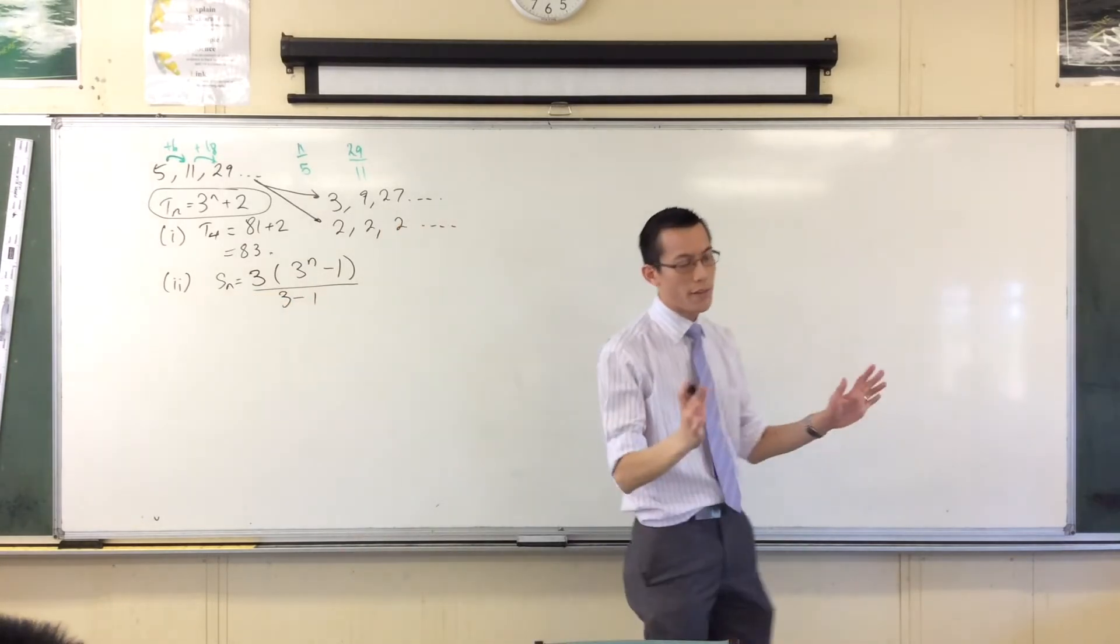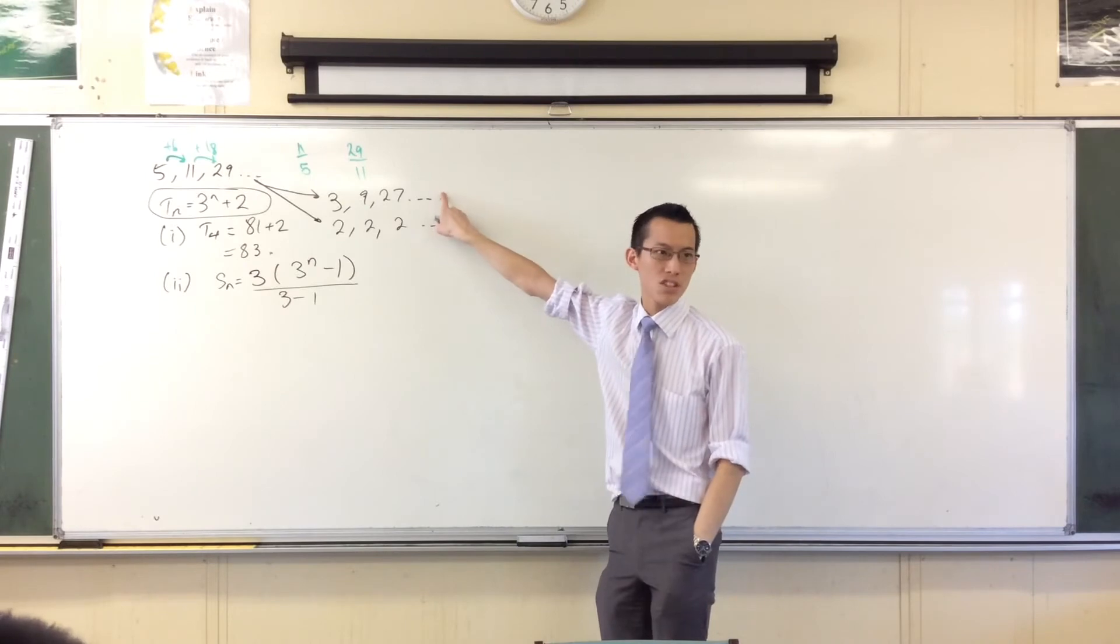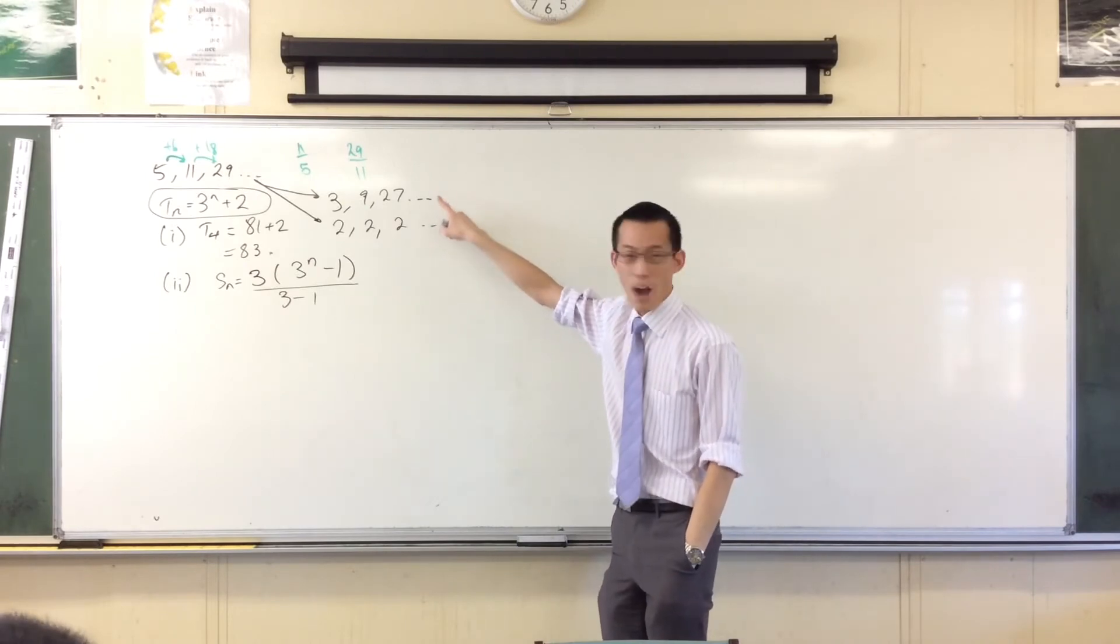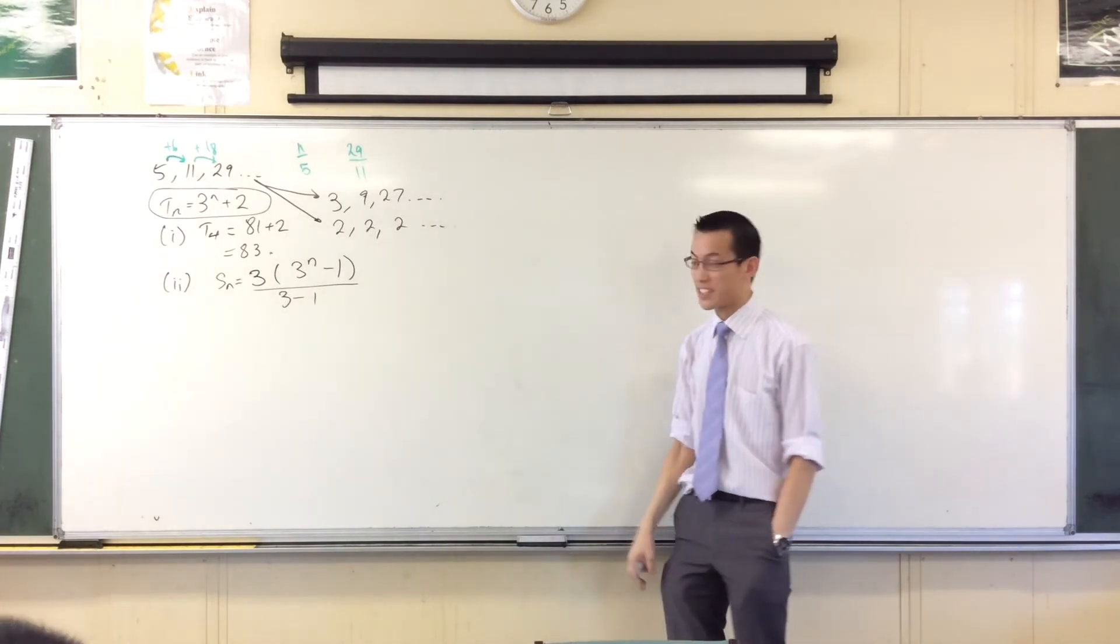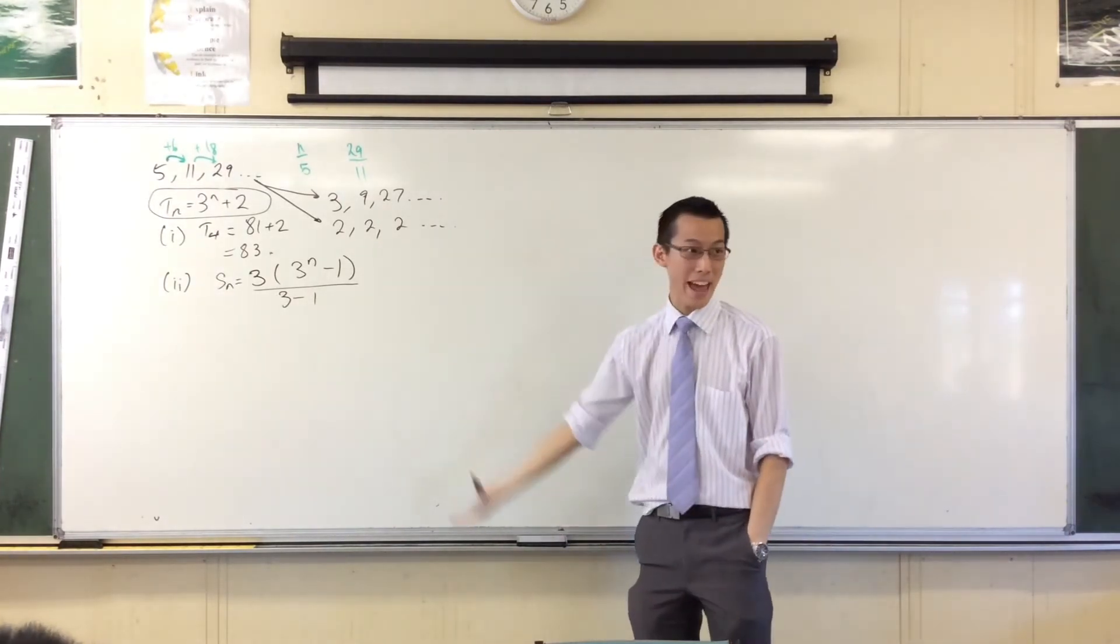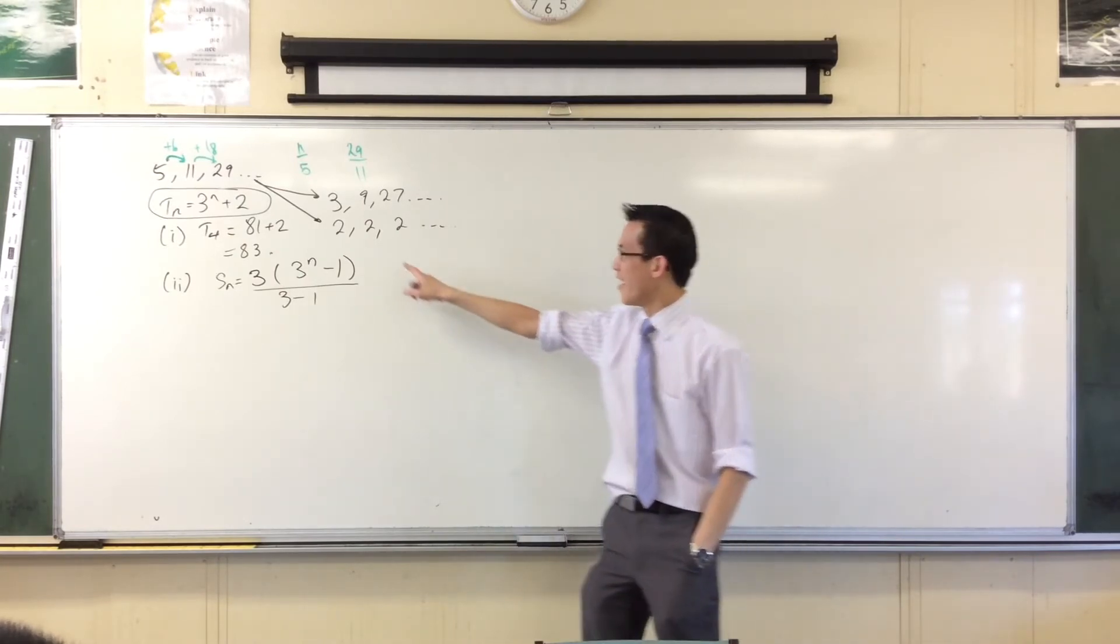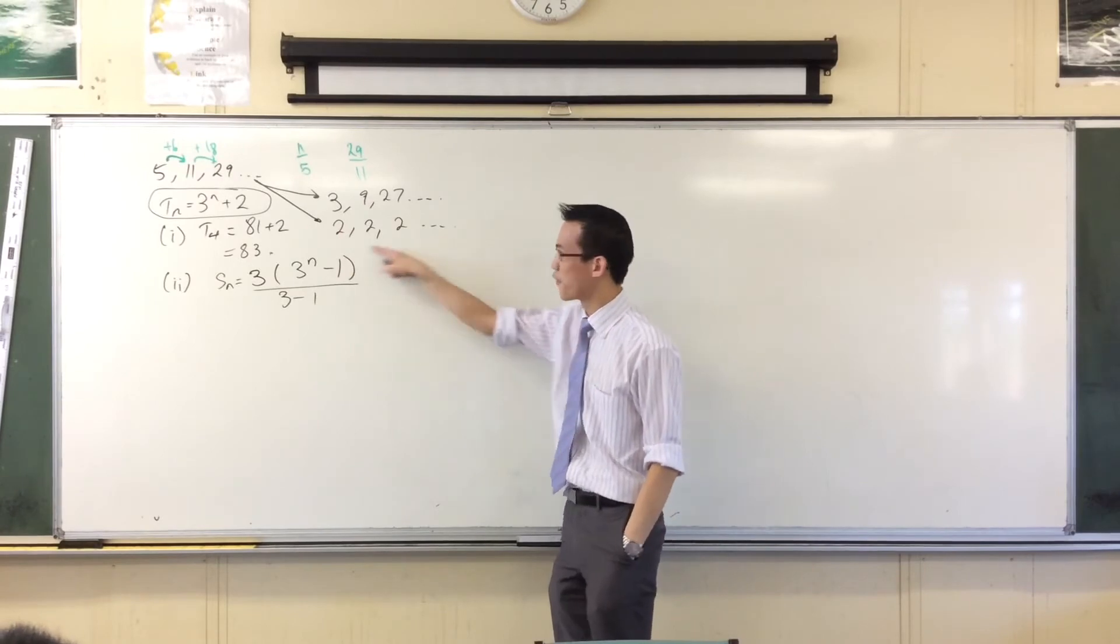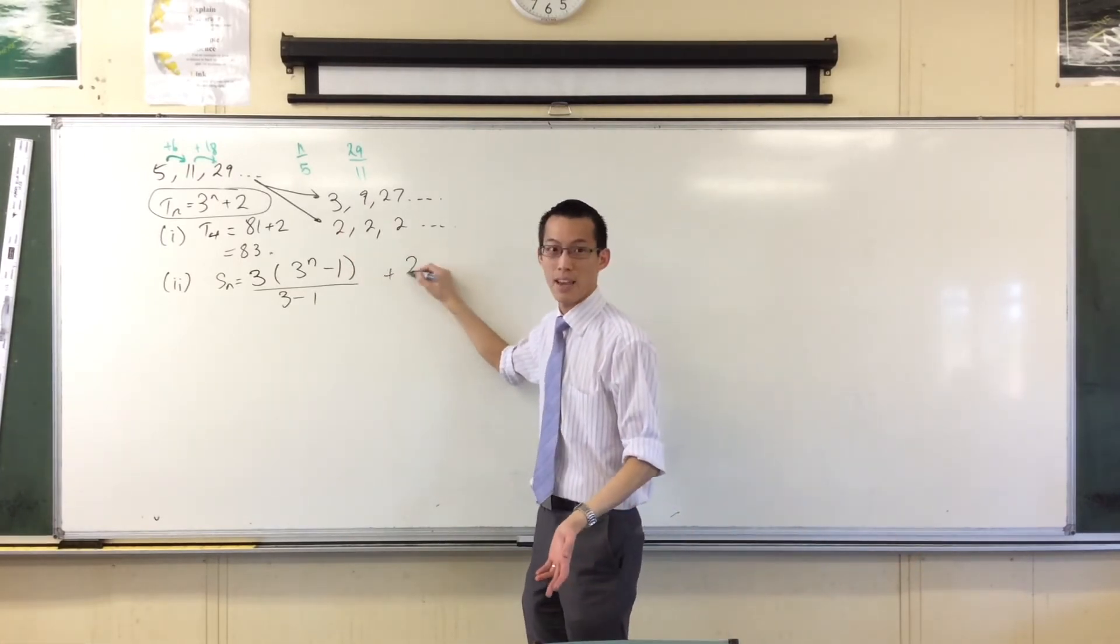Now, pause. I will evaluate that in a second, but all that's going to cover is this. That's just going to cover this. I also need to include this. This gets added all the time as well. Now it's a GP, I could reach for my GP formula. It's an AP, I could reach for my AP formula. But you don't really need to do that, do you? That's 2n.